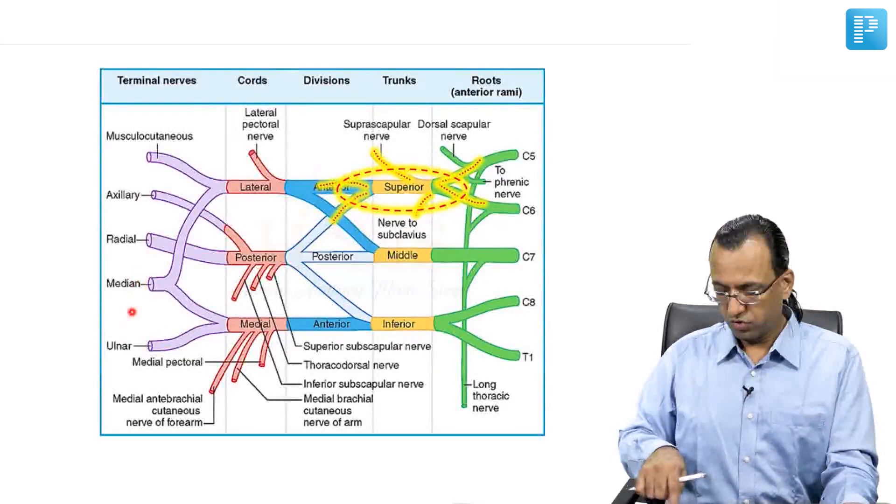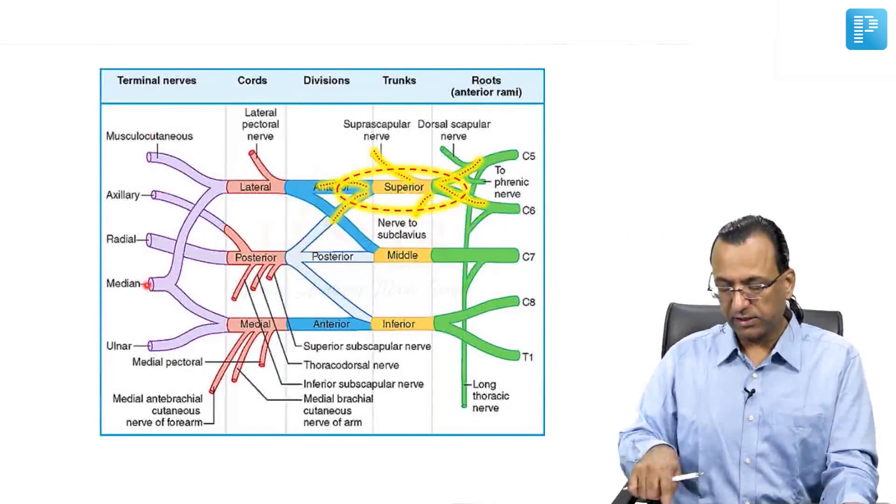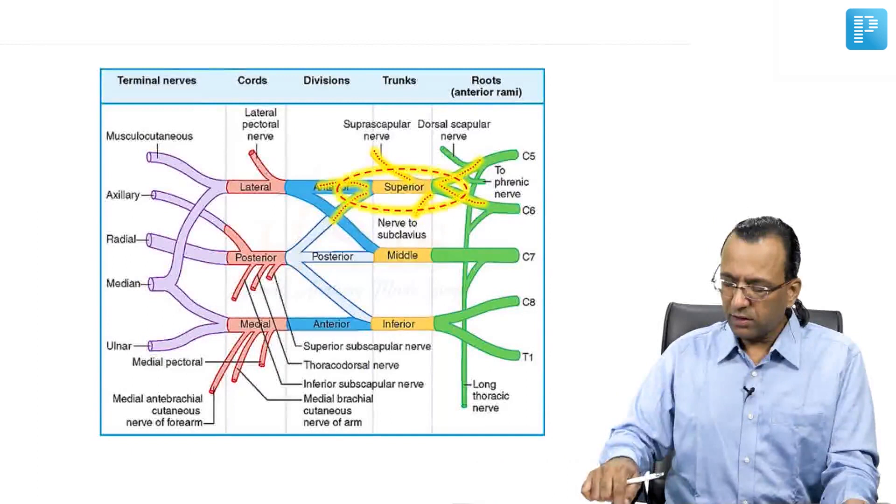And not the ulnar nerve? No. Why not the ulnar nerve? Because ulnar nerve does not have C5, C6. So who is involved? Whatever nerve has the root value C5, C6 is involved in Erb's Palsy. Also remember one thing.